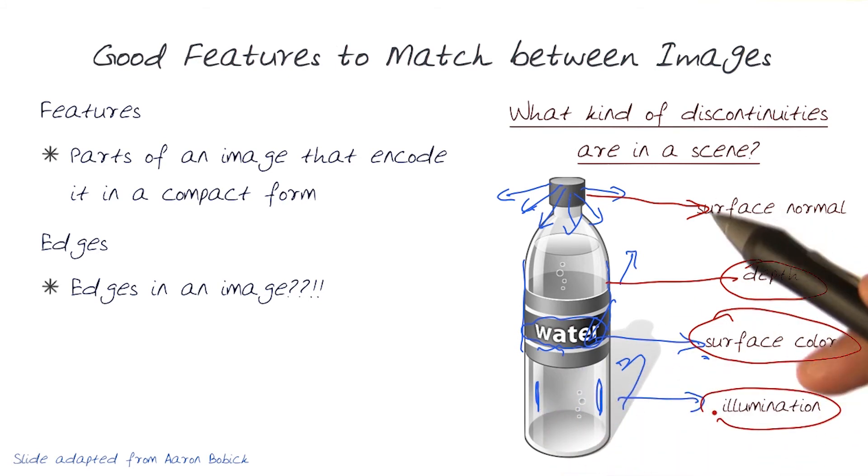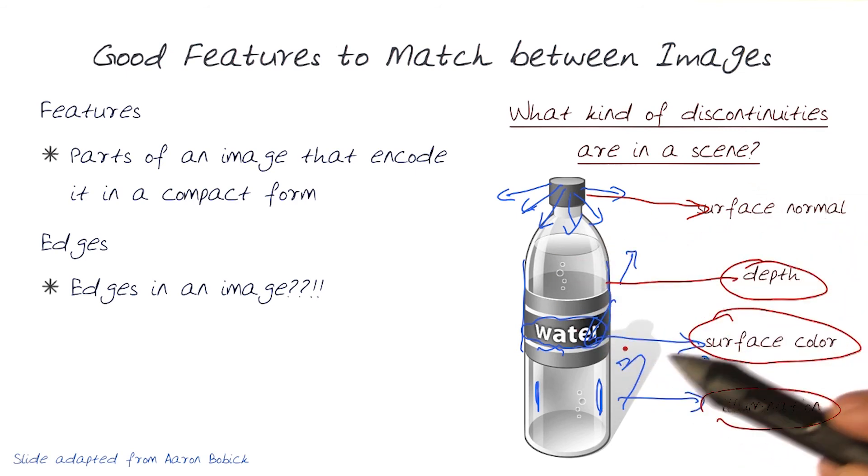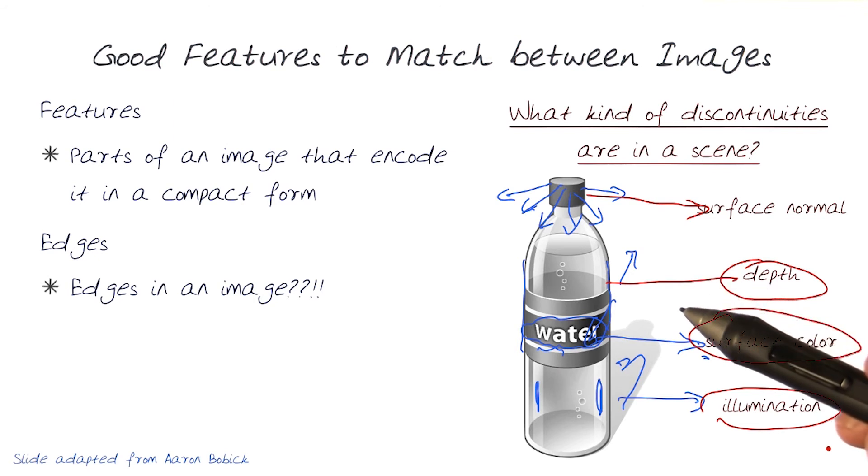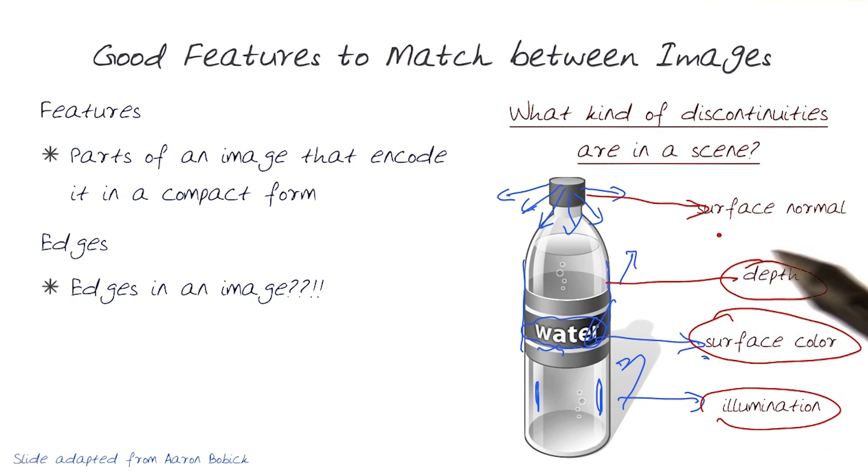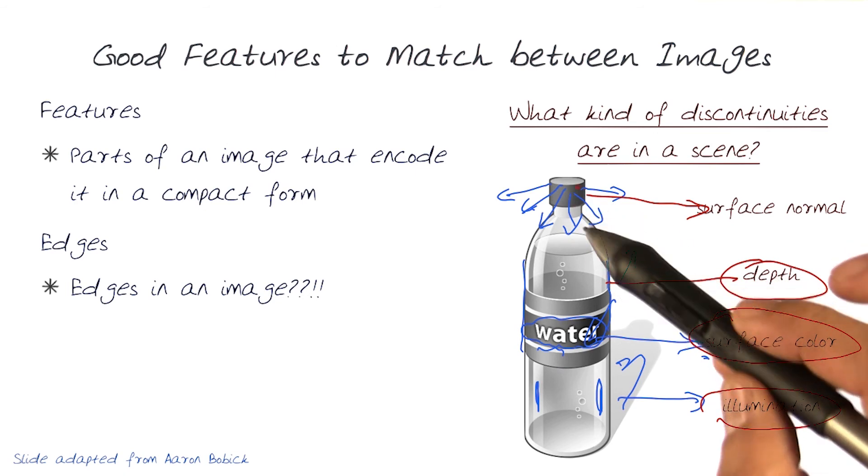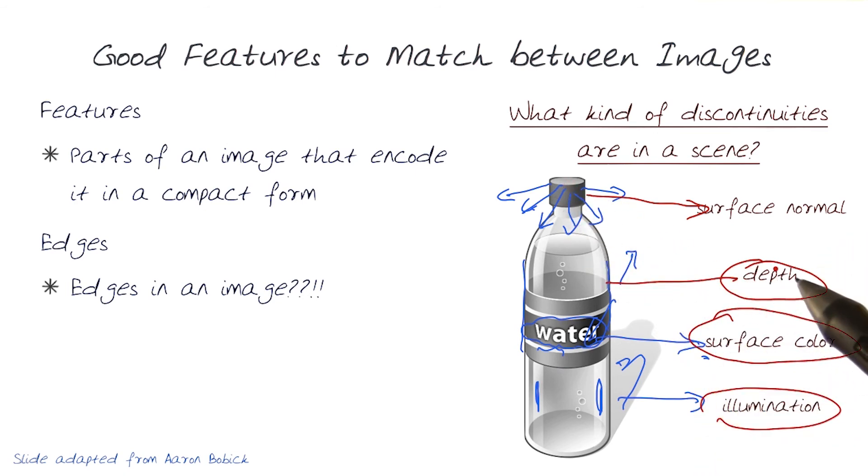So hopefully you see now that by just looking at various types of discontinuities, we can start extracting some information about an image. What we now want to do is go back to the image itself and look for certain sets of discontinuities that would best capture the changes because of the normals, the depth, surface color, and illumination.